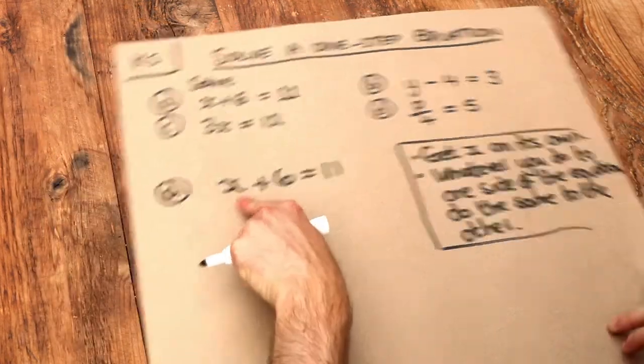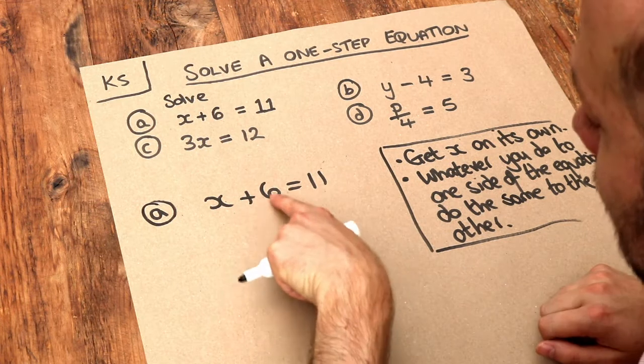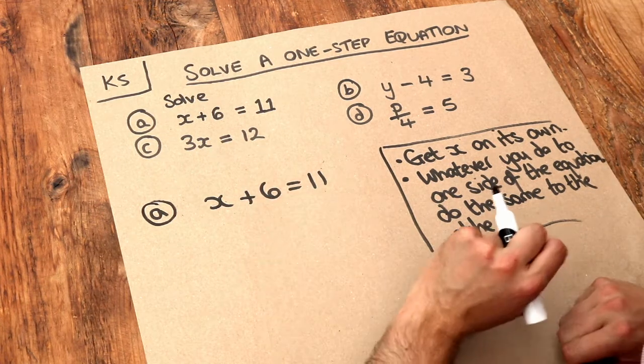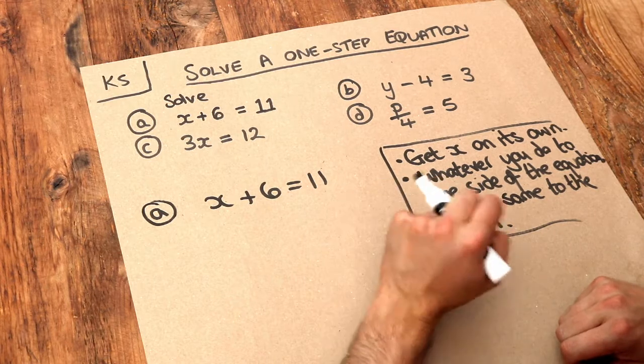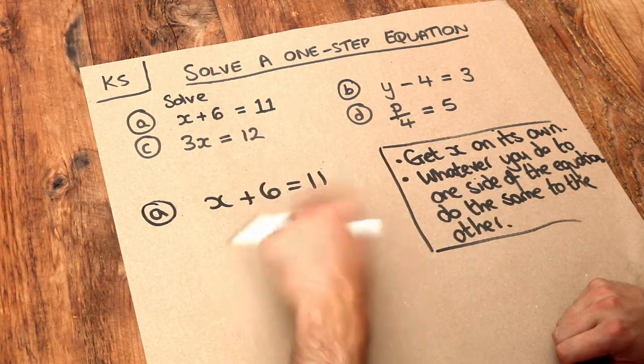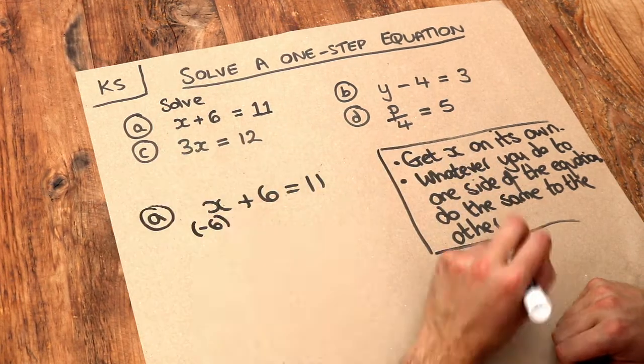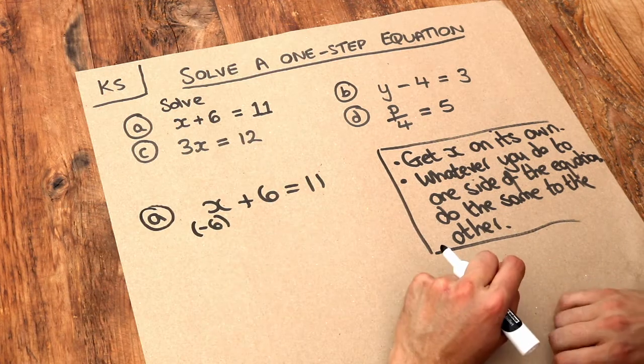We want to get x on its own, but we've got this plus 6 here that we don't want. So how do we get rid of the plus 6? We do the opposite. What's the opposite of adding 6? Subtracting 6. So I'm going to minus 6 from the left-hand side of the equation.